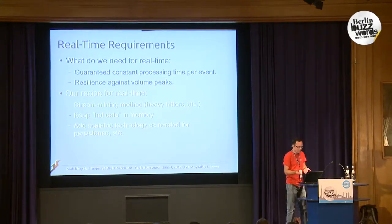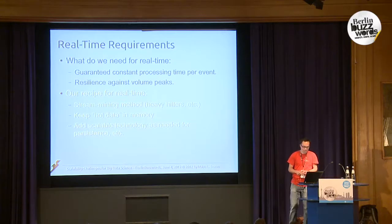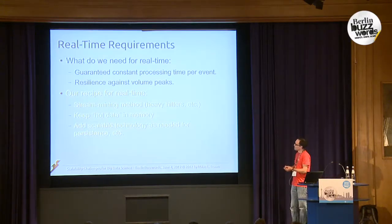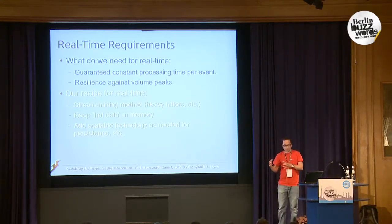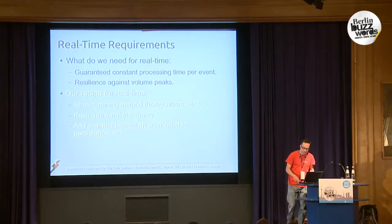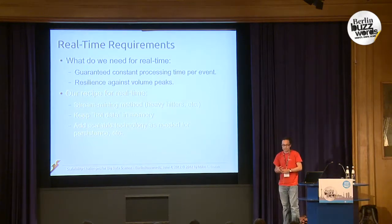What you actually want for real time is guaranteed constant processing time per event and resilience against peak volumes — a way to detect when you're receiving more than you can handle and do something about it. The recipe for this is stream mining. Stream mining methods are actually built for having constant processing time per event. The other key thing is keeping the most interesting data in memory — no database cluster of any size can beat the speed of data in memory.